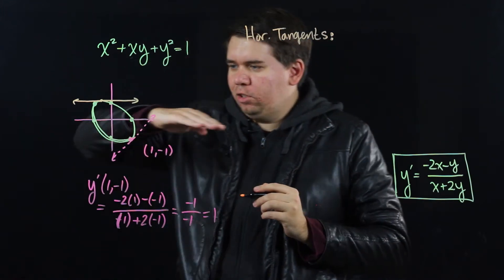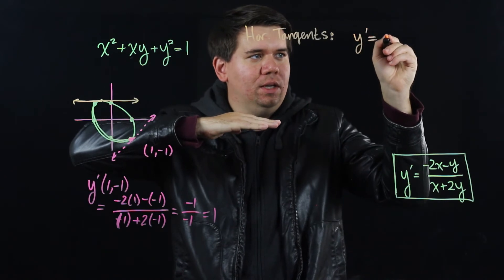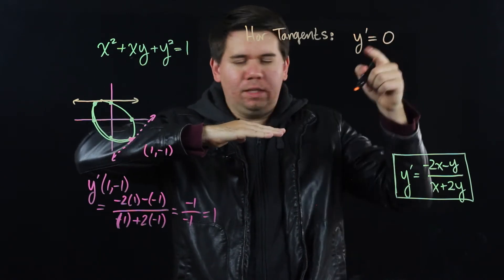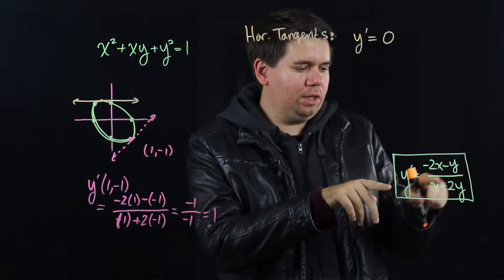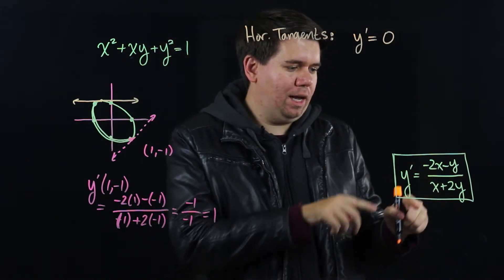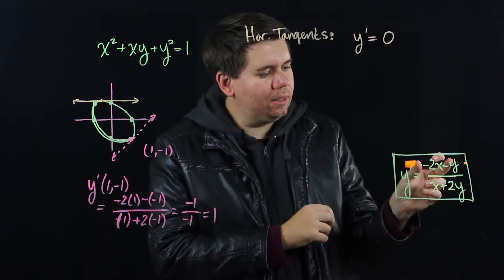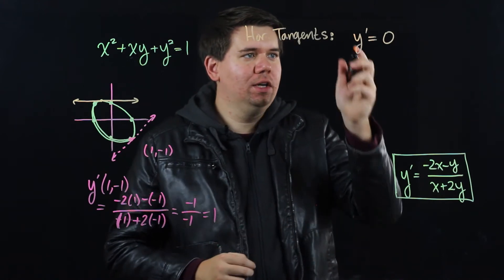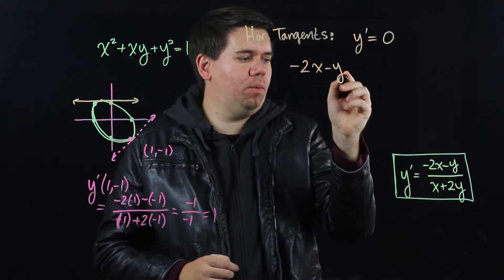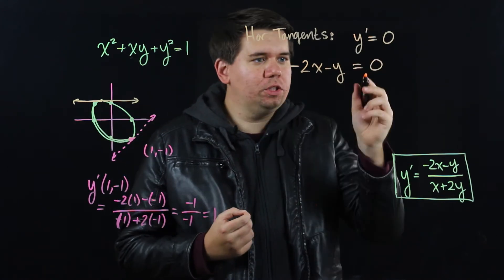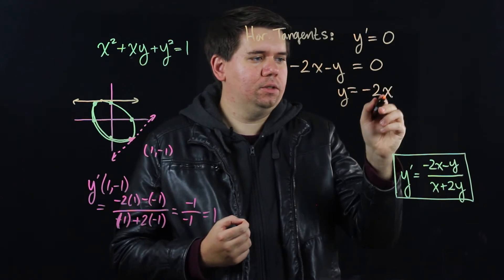So if I want to find horizontal tangent lines, I'm looking for places where the tangent line lies flat. That is where my derivative should be equal to 0. Because 0 would be horizontal. So to find where my horizontal tangent is, I'll just look at this equation for my derivative. And I say, I want that to be 0. Well, I know a fraction is 0 exactly when the top of that fraction is 0. So this is the same as saying minus 2x minus y is 0.